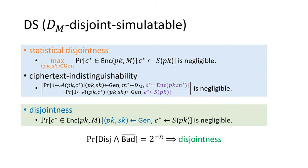Then, we can prove that if the bad event doesn't happen, the probability of disjointness is very small, and the disjointness can be proved.